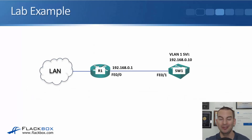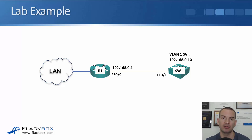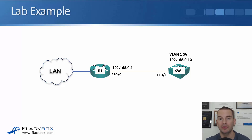Let's have a look at how to do this in the lab. For the lab example, we've got router R1 and we're going to configure IP address 192.168.0.1 on physical interface FastEthernet 0/0. That's going to be the default gateway address for switch1, which is connected to the router through physical interface FastEthernet 0/1 and will be in VLAN 1 by default. For the management IP address, we'll configure that on the VLAN 1 switched virtual interface and give it IP address 192.168.0.10.